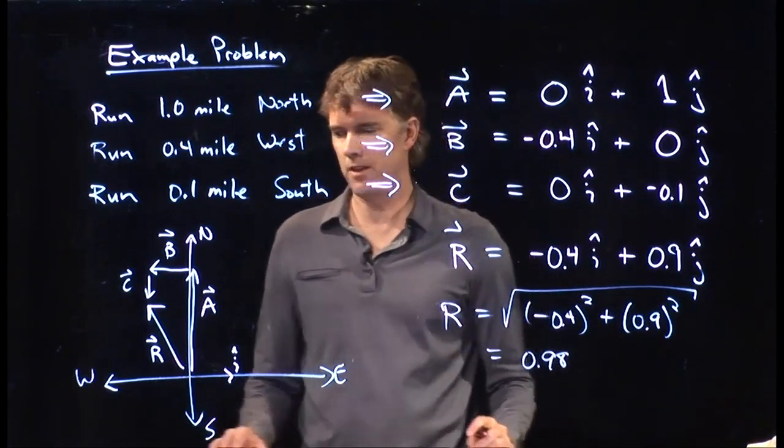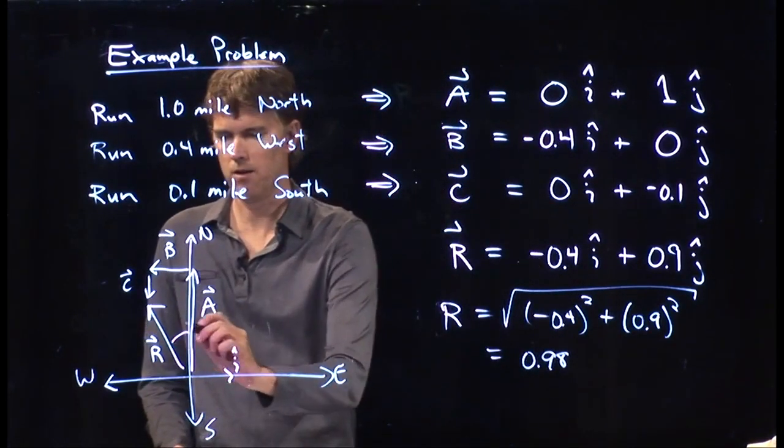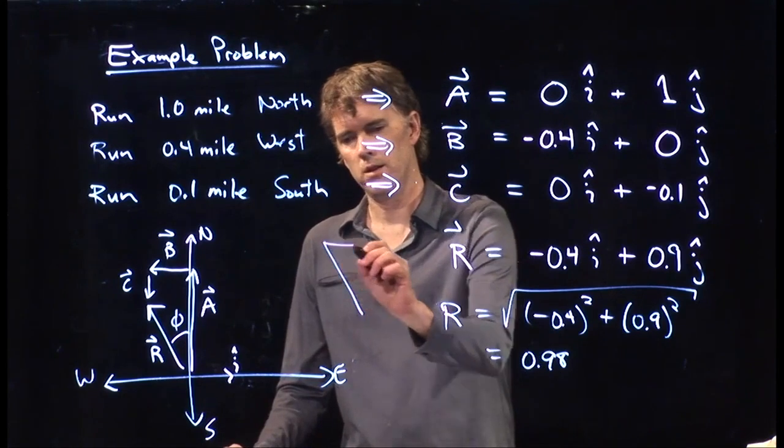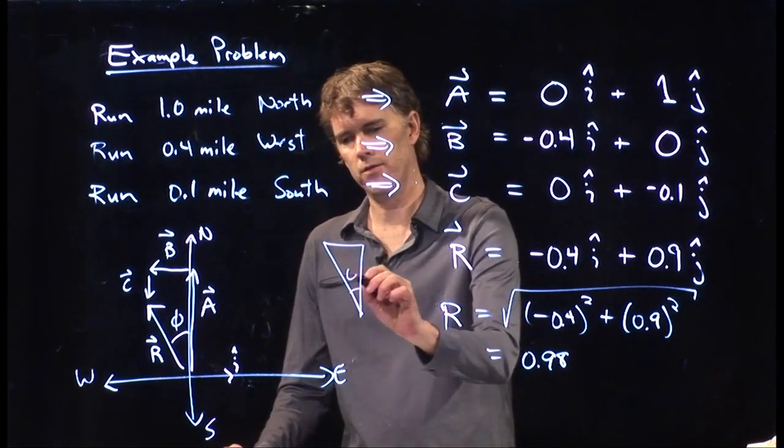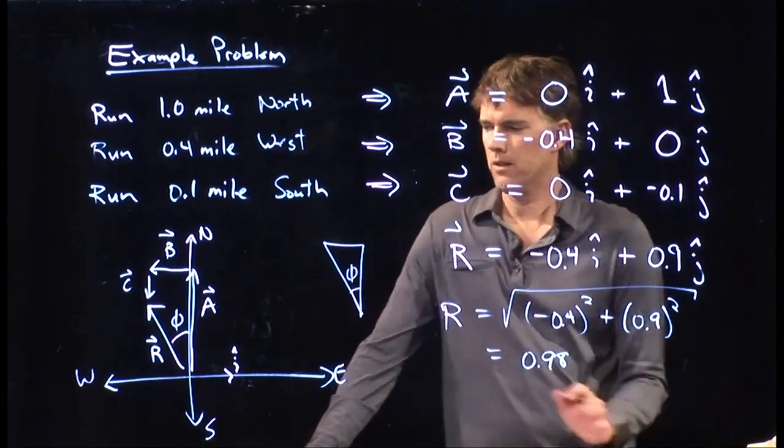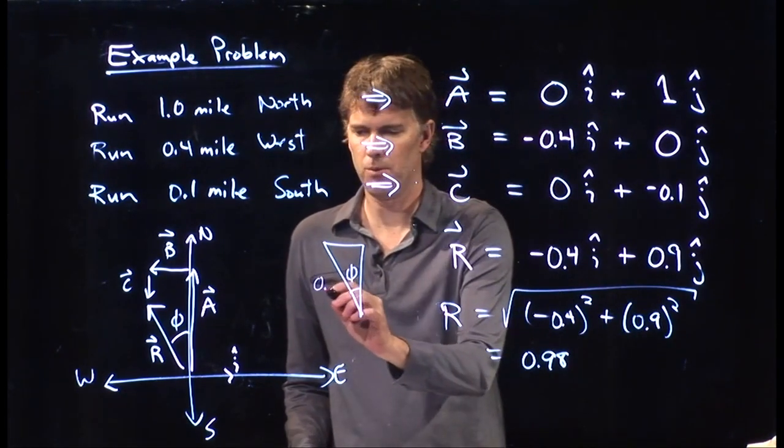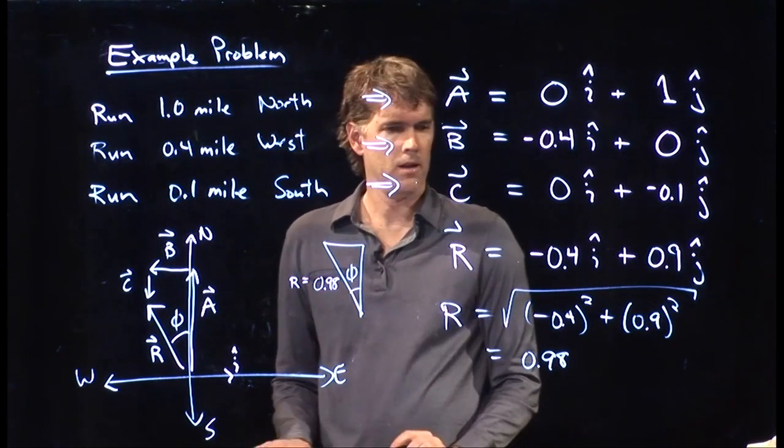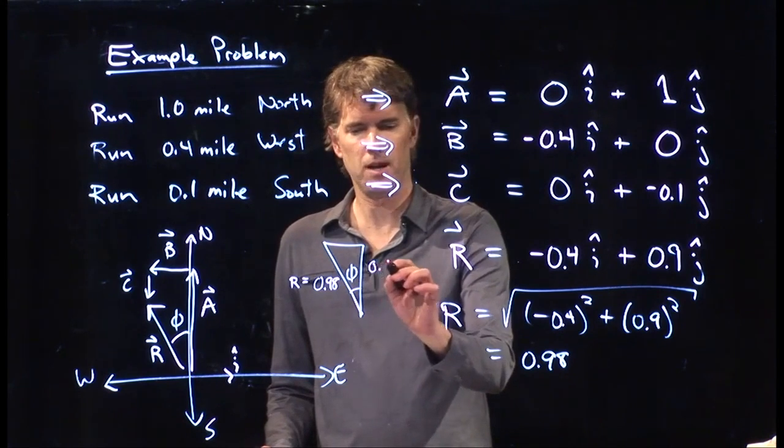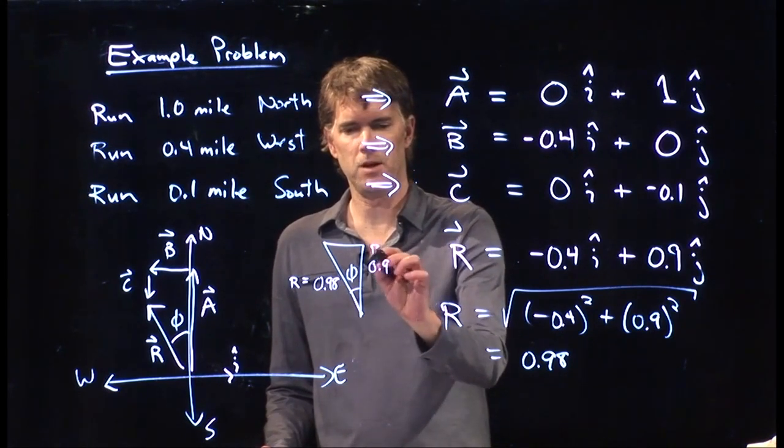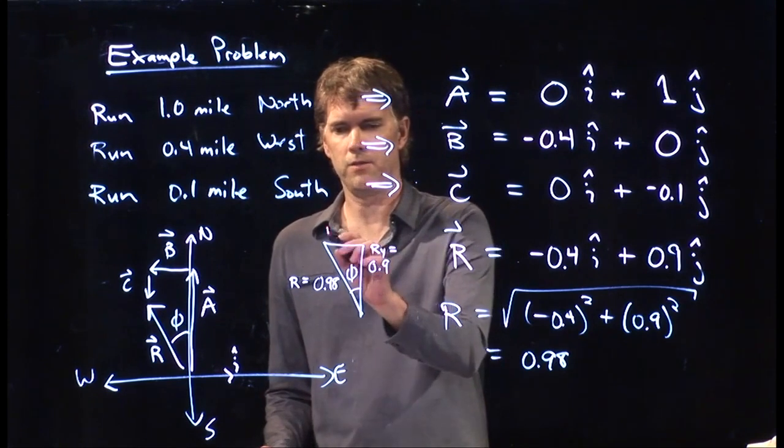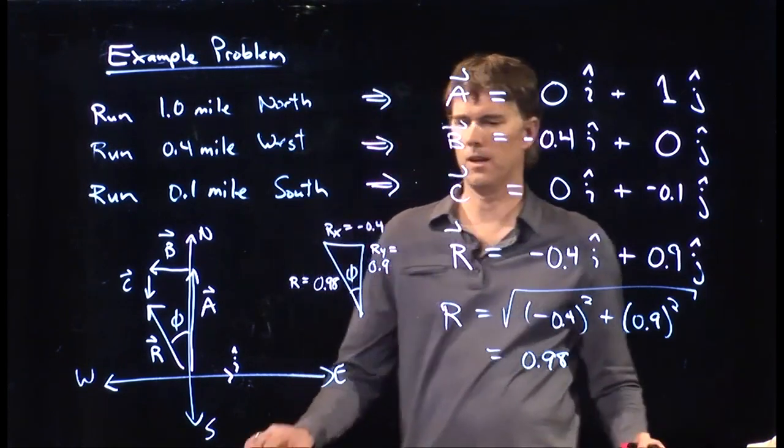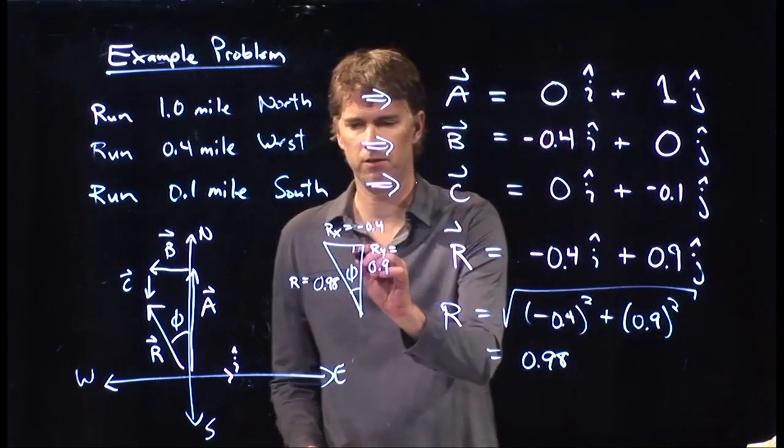And if you want to figure out, say, this angle right here, phi, how do we do that? Well, let's draw the triangle, phi. This is 0.98, which we said was r. This was 0.9, which that's going to be our r sub y. And this is our r sub x, which was negative 0.4. And those are the three sides of our triangle. This is, again, a right angle.